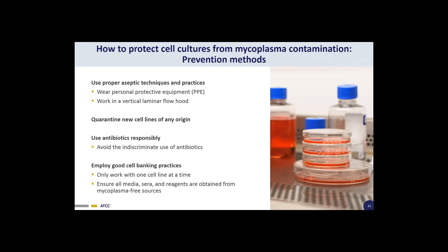To both avoid and control the spread of mycoplasma contamination during cell culture, we recommend the following laboratory practices: use proper aseptic techniques, wear personal protective equipment (PPE), and work in a vertical laminar flow hood. Always quarantine any new cell lines. If you're going to use antibiotics, use them responsibly — avoid indiscriminate use, as you can generate antibiotic-resistant bacteria within your culture. It's also important to employ good cell banking practices: only work with one cell lot at a time, and ensure that all media, sera, and reagents are obtained from mycoplasma-free sources.